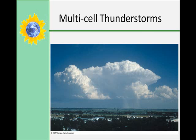Multi-cell thunderstorms are when you have multiple cells. The downdraft from a dissipating cell thunderstorm will fuel the formation of the next cell. It's almost like dominoes — one dies, and it creates a new one.